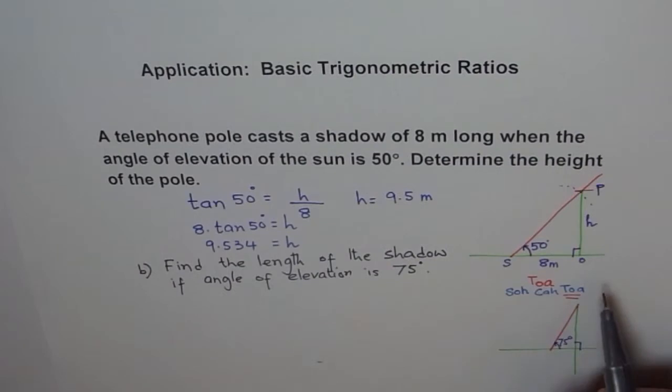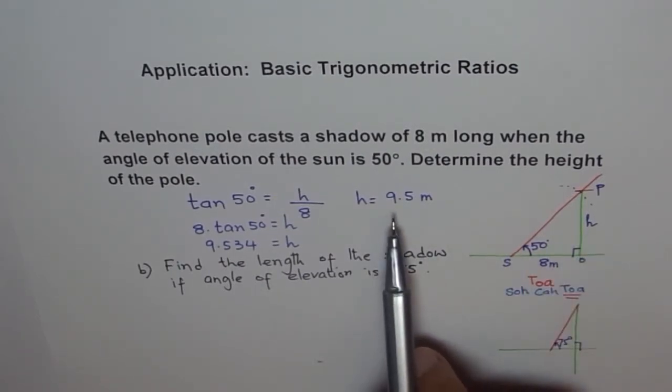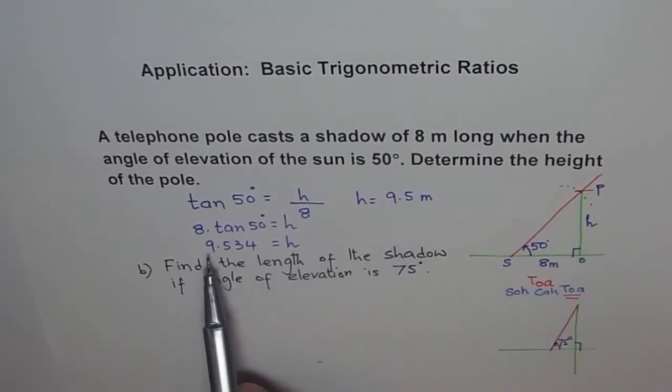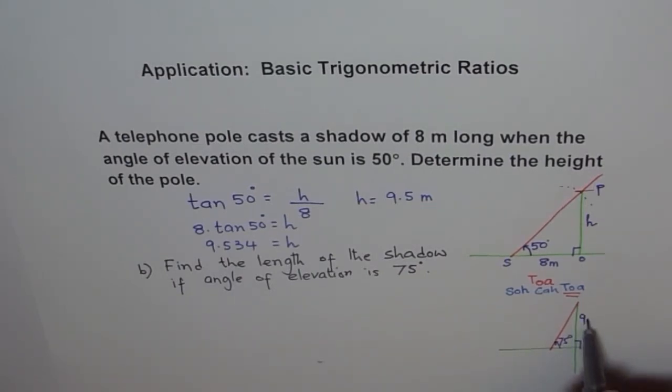For calculations, it's better to use three or four decimal places for accuracy. I'll use 9.534 for this calculation. So the height is 9.534. What do we need to find? We need to find S', the shadow length from O.